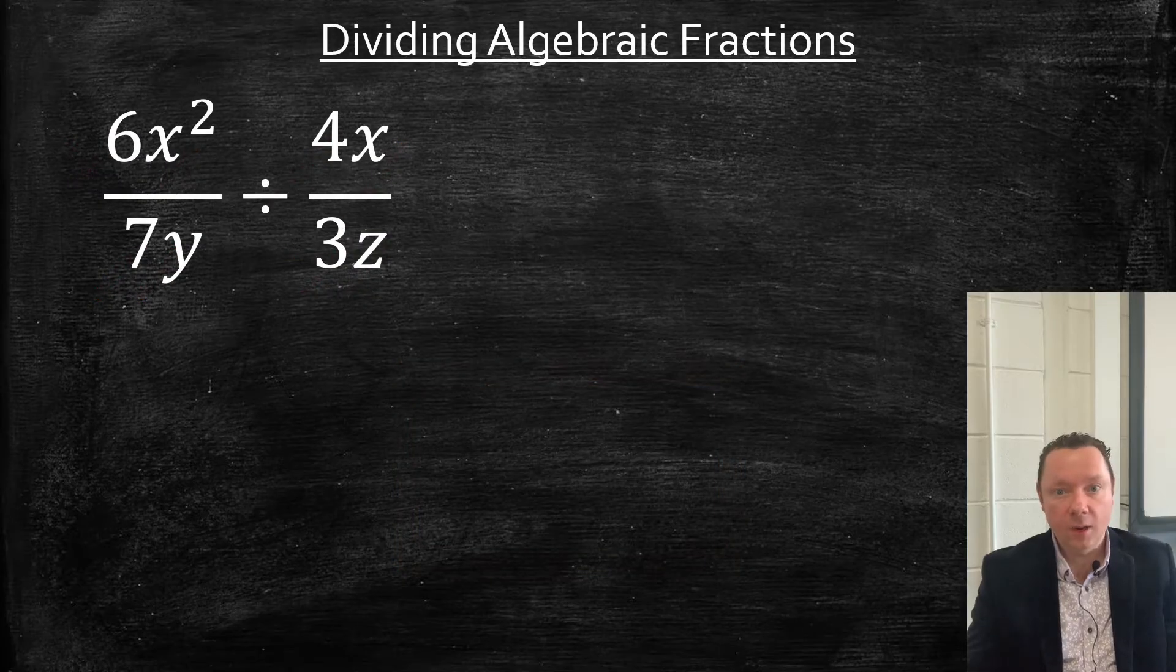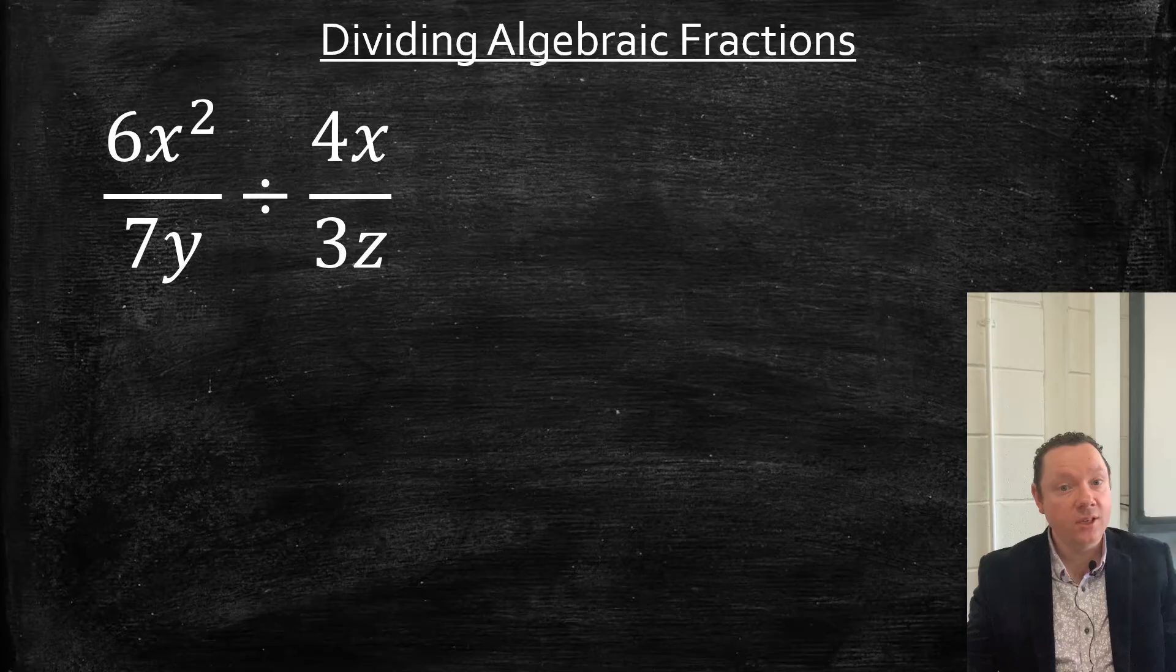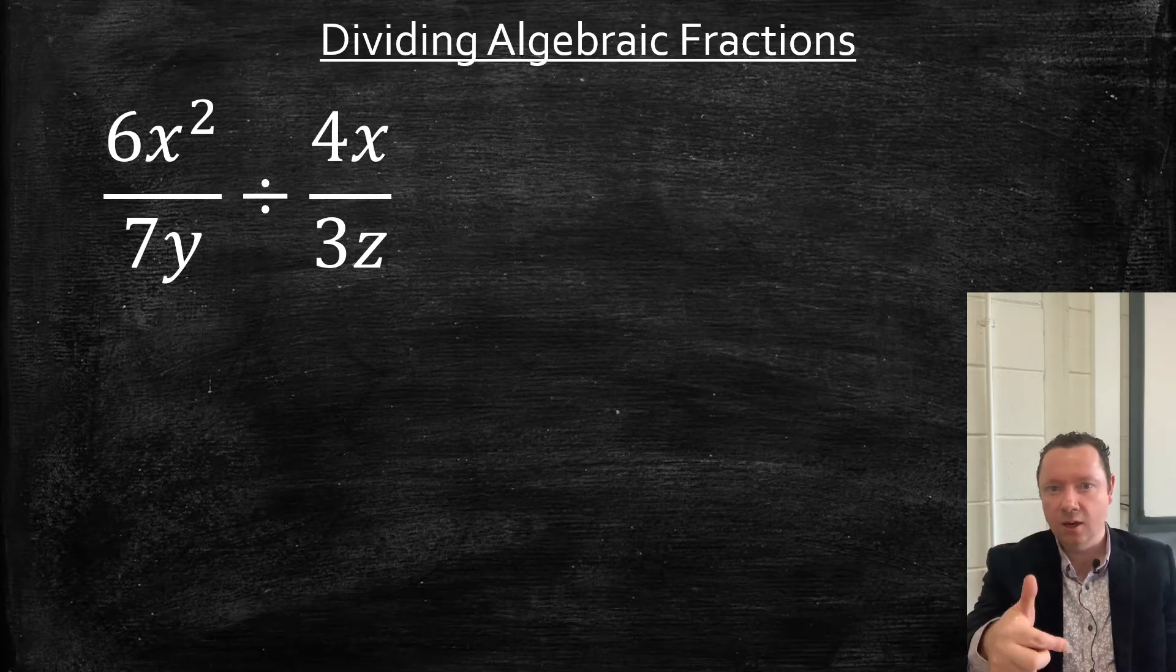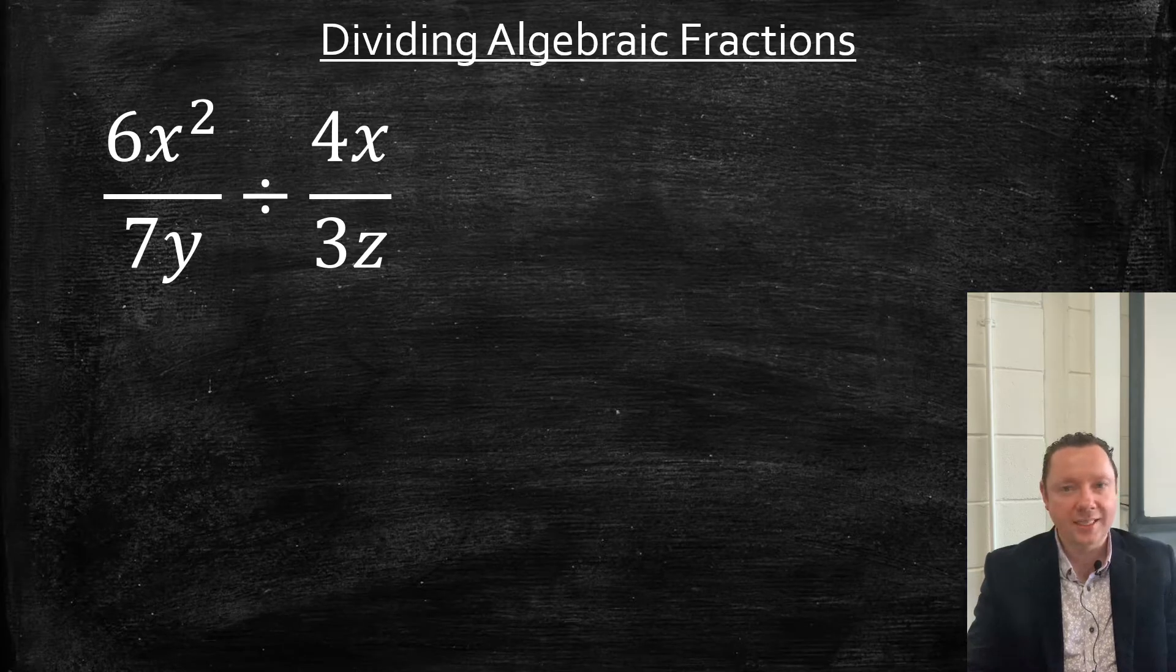Dividing. A little bit harder. When you divide by a fraction, always, whether it's numbers or algebra, divide turns to times and we times by the reciprocal. What does reciprocal mean? It's like taking the fraction and turning it upside down. And it's the second, the one after the divide sign. Let's have a look at that. Let's see how that looks. So we've got (6x²)/(7y) ÷ (4x)/(3z).